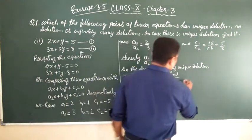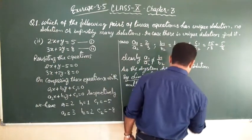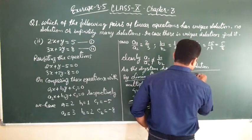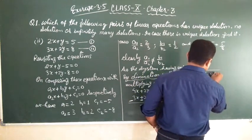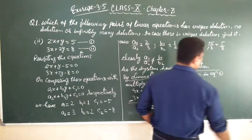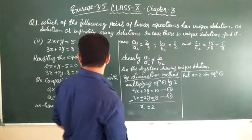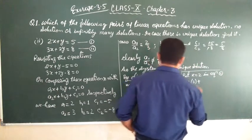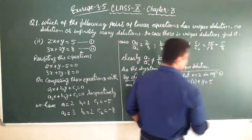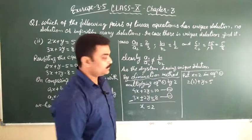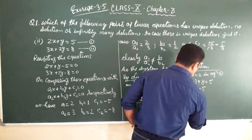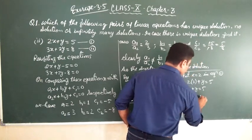Now put x is equal to 2 in any equation. Put x is equal to 2 in equation 1. Equation 1 is 2 into 2 plus y is equal to 5. 4 plus y is equal to 5. Then y is equal to 5 minus 4, that is 1.